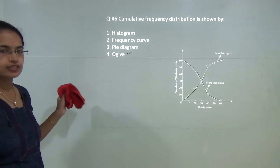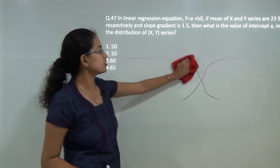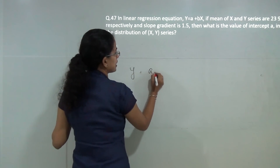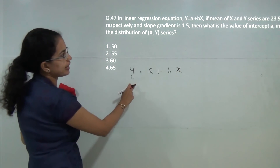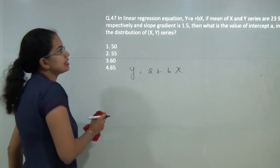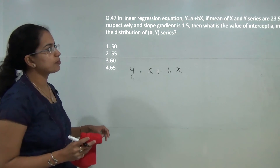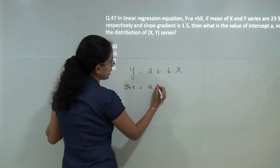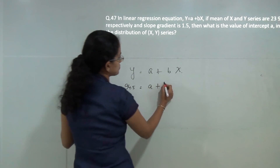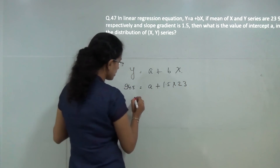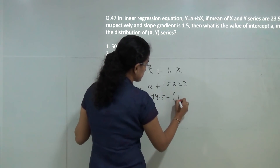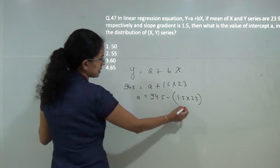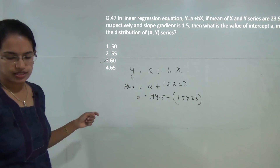The next question requires finding the value of the intercept 'a' for the given data. Using y = a + bx, with the mean of x equal to 23 and mean of y equal to 94.5, and the slope b = 1.5: 94.5 = a + 1.5 × 23, solving gives a = 94.5 − 34.5 = 60. So option 3 would be the correct answer.